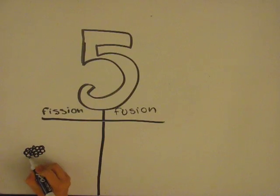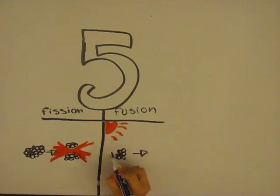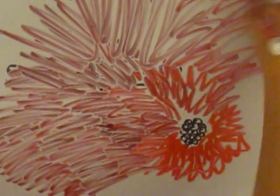Fission is when an atom is split in two and releases energy. This is the type of energy that a nuclear power plant has. Fusion only happens on the sun because of its extreme heat, and it is when two atoms are fused together and release energy.